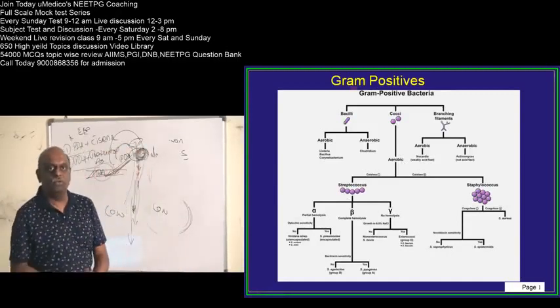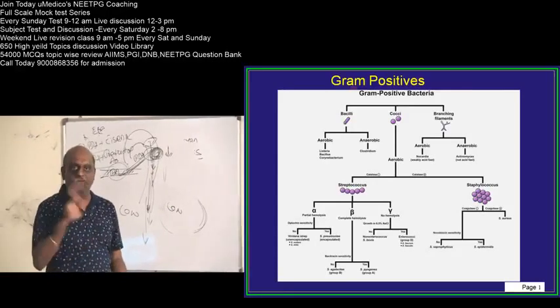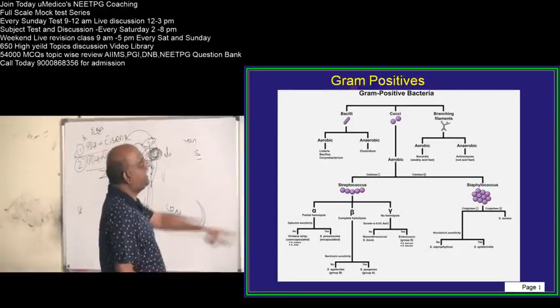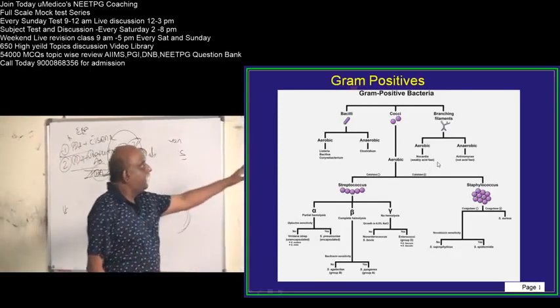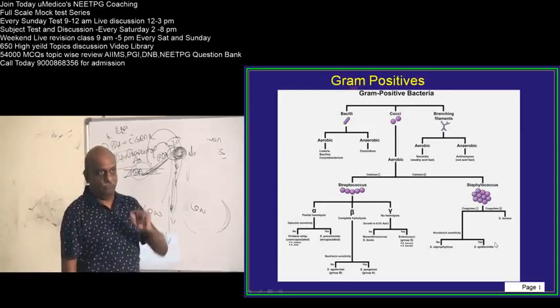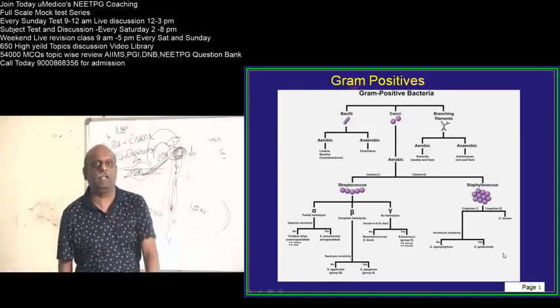The moment examiner asks you, gram positive, branching filament, aerobic. Reflexively, you should answer it as nocardia. And nocardia is weakly acid fast. One more special point about it.